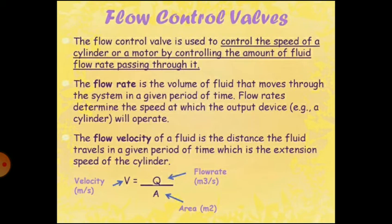Flow is an action factor of hydraulic power. The speed at which the actuator — that is cylinder or motor — moves is decided by the flow, whereas the force exerted by the actuator is determined by pressure. The flow velocity of a fluid is the distance the fluid travels in a given period of time, which is the extension speed of the cylinder.